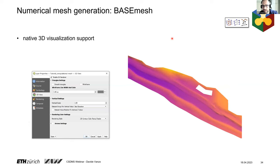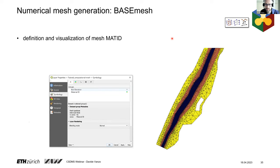QGIS now has native 3D visualization, so you can build your computational mesh and visualize it in 3D immediately to check quality. You can also visualize the material index you assign to your mesh — linked to hydromorphodynamic parameters in the model setup — and identify different material zones with different colors.